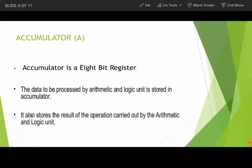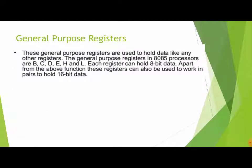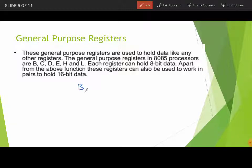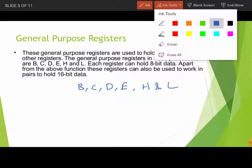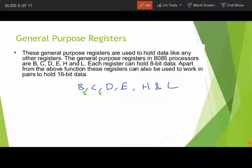Next are the general purpose registers. General purpose registers are used to hold data. The general purpose registers in 8085 are B, C, D, E, H, and L, as shown in the figure. Each register is 8-bit in size, meaning they can each hold 8 bits of information. There are six general purpose registers in total.